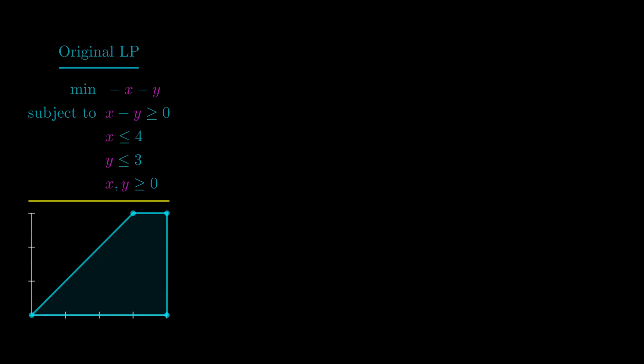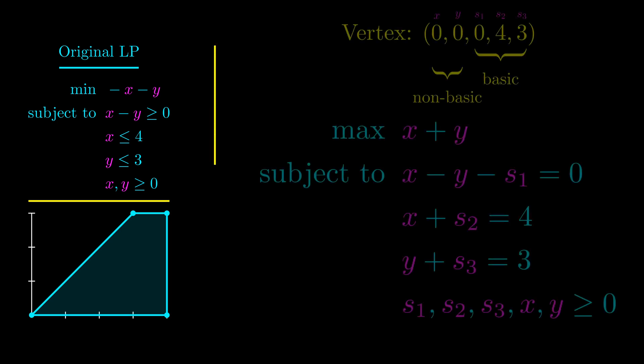Now, we'll get into how to actually perform an iteration of the simplex method. On the left, we have the original linear program in its feasible region. On the right, we have the linear program in standard form, as well as the initial vertex that we found.